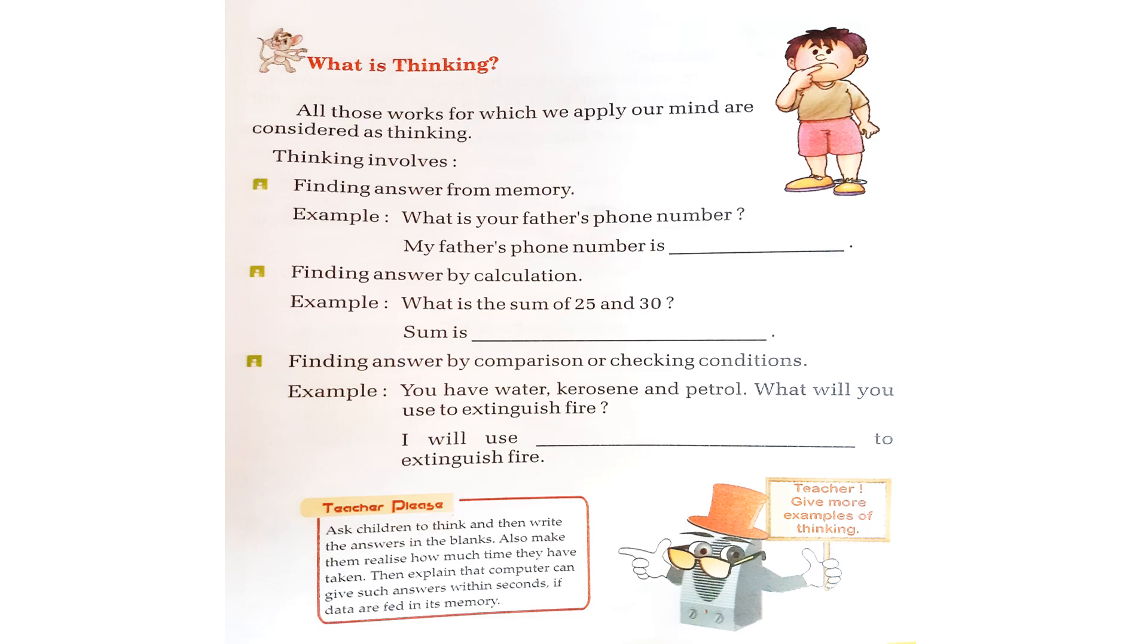Finding answer from memory. When anyone asks you something, you will take it from your memory and say. That is all involved in thinking. What is your father's phone number? Can you say without thinking? No. It will be stored in your brain. With that, you will answer it. My father's phone number is. Can you write your father's phone number over here?